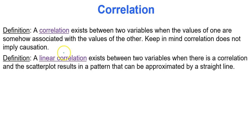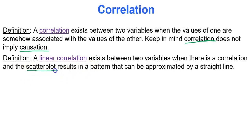Correlation exists between two variables when the value of one is somehow associated with the value of the other. Keep in mind that just because you have correlation, it does not imply a cause and effect relationship. It could appear that there's a relationship between two things, but maybe that relationship is because of a third variable we did not consider. So correlation does not always imply causation. A linear correlation exists when there is correlation and the scatterplot results in a pattern that can be approximated by a straight line.